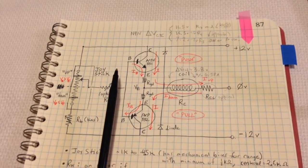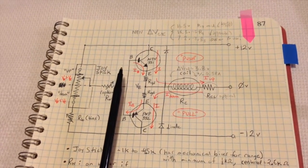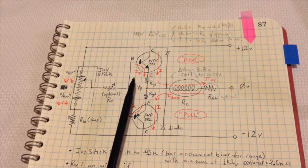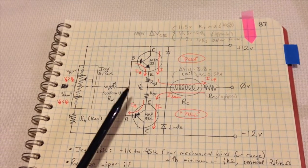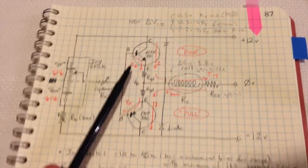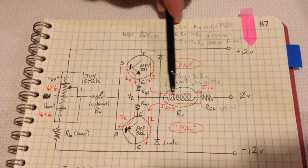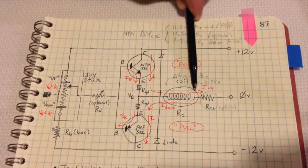What we needed to do for our simple arrangement of coils is be able to drive the current in one direction. That's called the push. You would do that whenever the joystick is in the forward direction. But then you'd need to reverse the current or what's called the pull in the opposite direction.